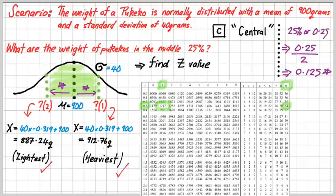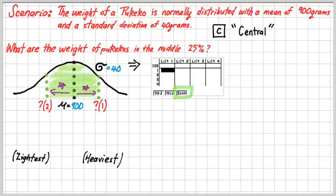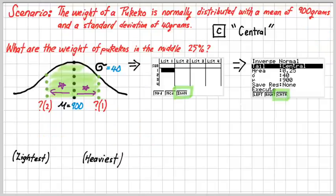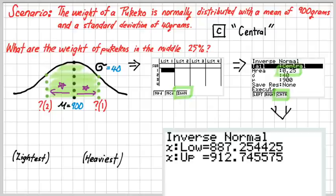Equivalently, we can do this on our graphics calculator by using the inverse normal function, this time selecting central as our tail, and the area in the middle is 25%. And there are our answers there: 887 grams and 913 grams. Thank you for watching.